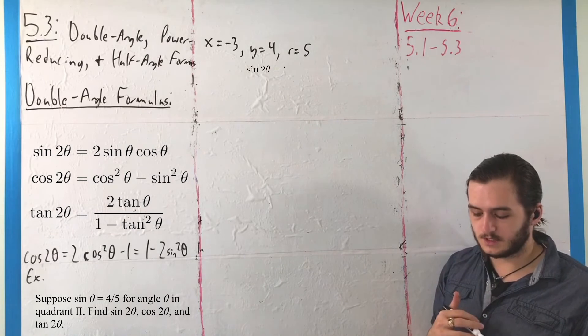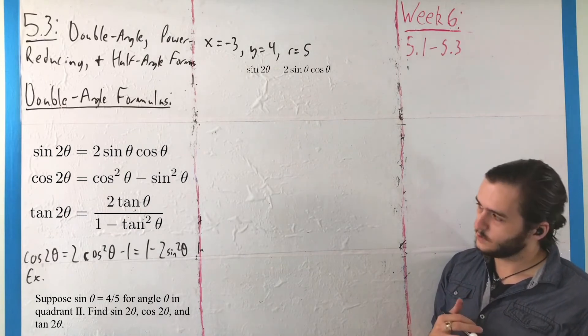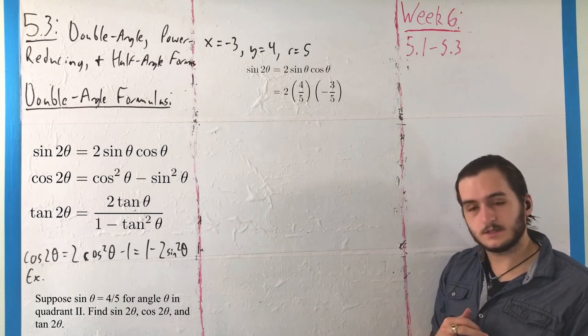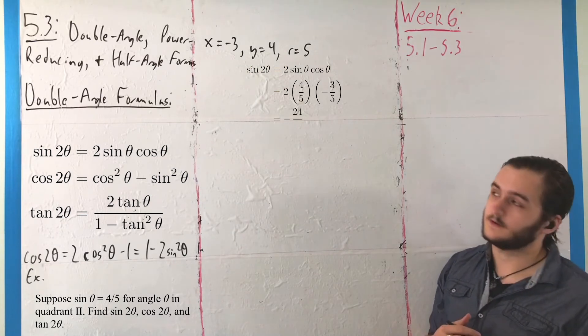Sine of 2θ is 2 sine times cosine, which in this case is 2 times 4/5 times negative 3/5, for a total of negative 24/25.